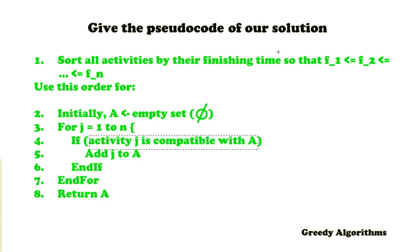Now let's talk about the pseudocode of our solution. We already said that we're going to sort our activities by their finishing time, so that the first activity is the activity with the smallest finishing time. We're going to use this order for the following. We're going to initialize a set called A. This is an empty set. And we're going to add the compatible activities to this activity set.